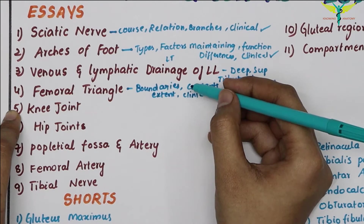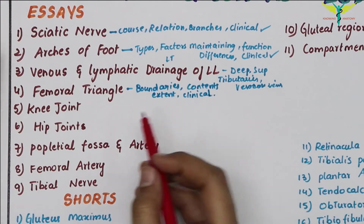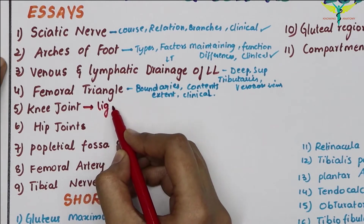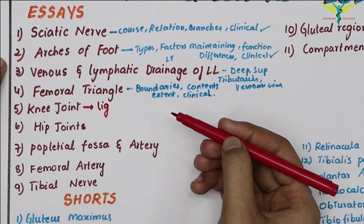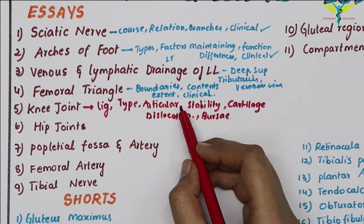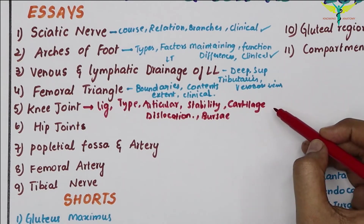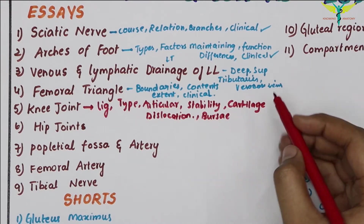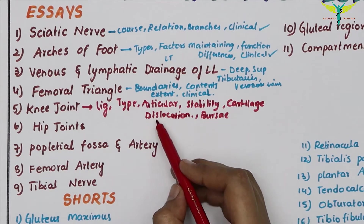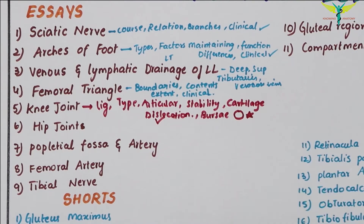The next essay question is the knee joint — very important. The ligaments of the knee joint are always important in essays, shorts, or very shorts. The headings include the type of joint, articular surfaces, factors providing stability, cartilages like the meniscus (very important in shorts too), dislocation of the knee joint as the clinical aspect, and the bursae around the knee joint.